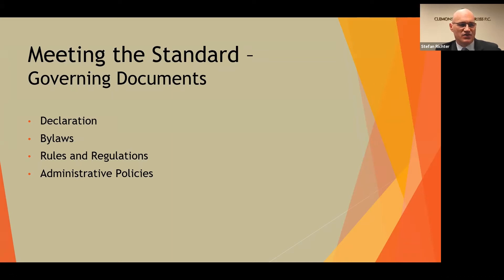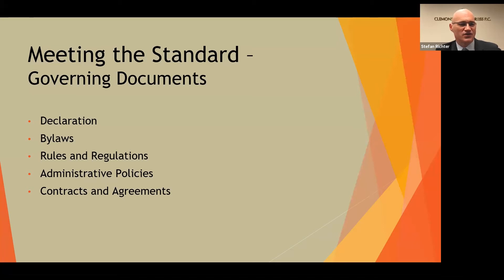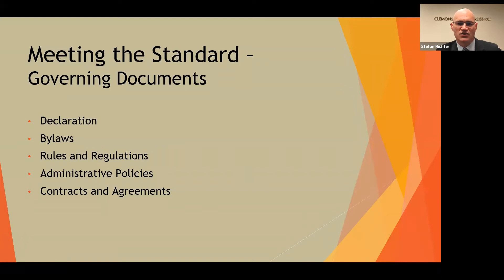Administrative policies of the association are sometimes contained in the rules and regulations, such as investment policies, confidentiality policies, or ethics policies. As a board member, you should be familiar with all of the association's documents, including contracts and agreements — management contracts, pool maintenance contracts, landscaping contracts. Know where they are, how to get to them, and how to ask for them, because these are obligations and agreements you as a board member enter into on behalf of the association. If you're spending association money through those contracts, you should be generally familiar with them.